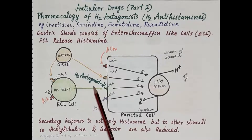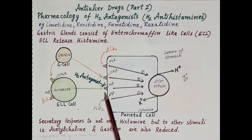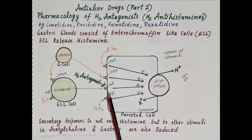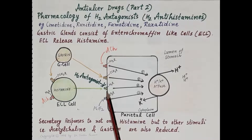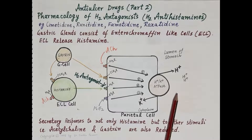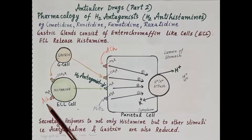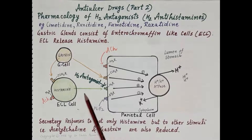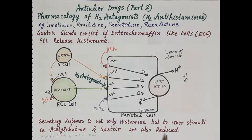H2 antagonists such as cimetidine, ranitidine, and famotidine are competitive antagonists of histamine at H2 receptors on parietal cells in the stomach. They block H2 receptors, prevent binding of histamine, and thus inhibit gastric acid secretion. Since gastrin and acetylcholine also indirectly stimulate parietal cells by releasing histamine from enterochromaffin-like cells, secretory responses to acetylcholine and gastrin are also reduced by H2 antagonists.